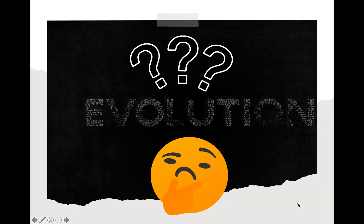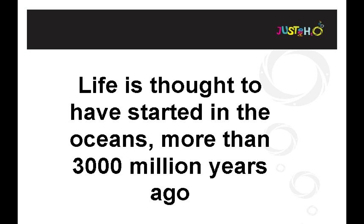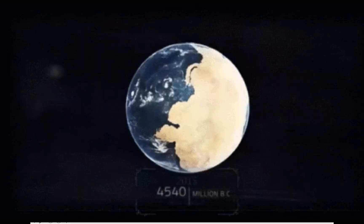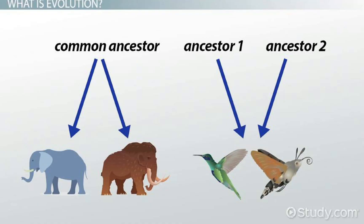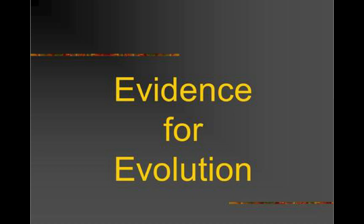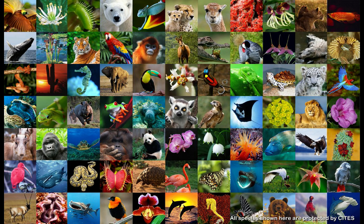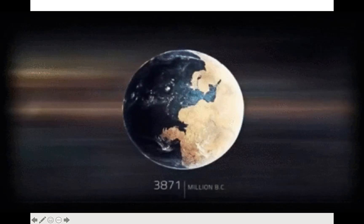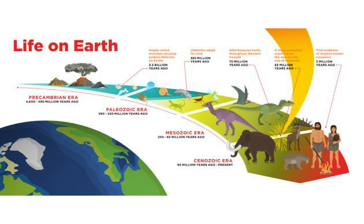How long has life existed on Earth? For over three thousand million years, and it has been changing constantly ever since. Scientists all agree that living organisms come from a common ancestor, using evidence from all different sources. Scientists concluded that the diversity of life on Earth is due to changes that happened over thousands of millions of years. During this time, the first living organisms somehow gave rise to the millions of organisms that exist today.